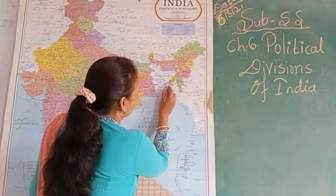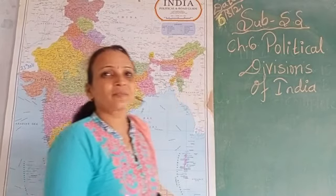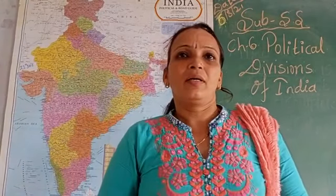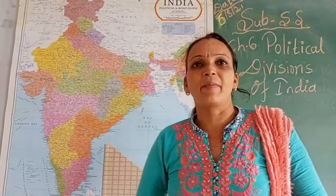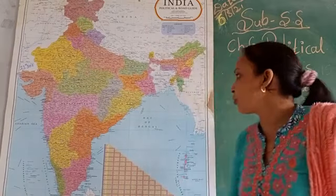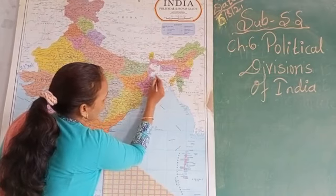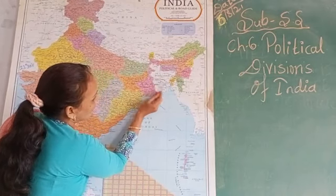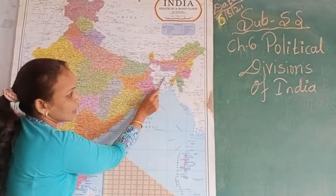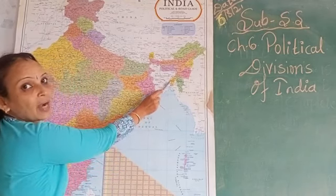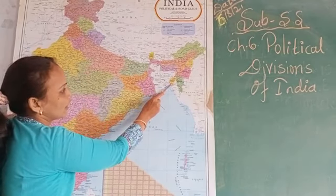Next is Tripura. Its capital is Agartala. This state shares its boundaries with Bangladesh. The languages spoken here are Bangla and Chakma.